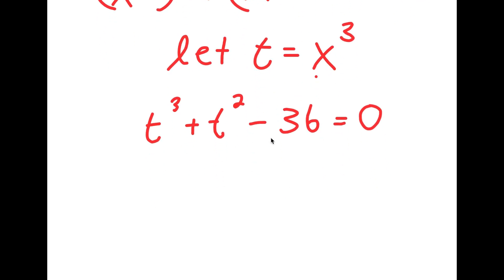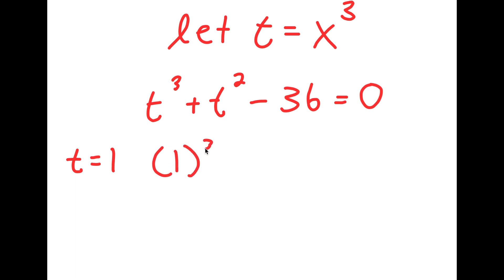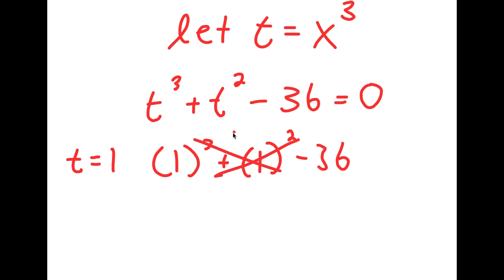To solve this and find all the solutions of t, we first need to find one solution and then use that to find the rest. To find the first solution, we start by guessing values of t. Let's try t equals 1: I get 1 to the power of 3 plus 1 squared minus 36, which is obviously not equal to 0.